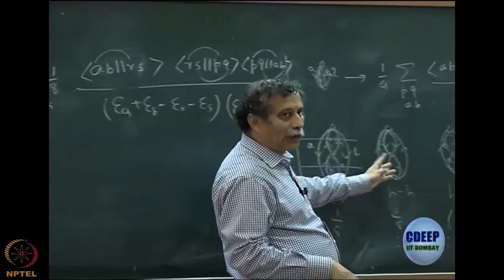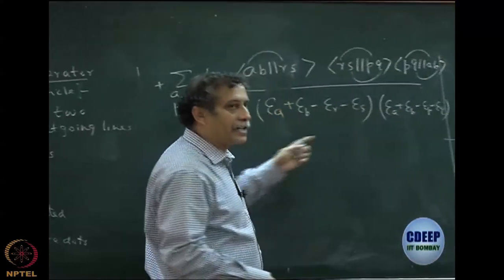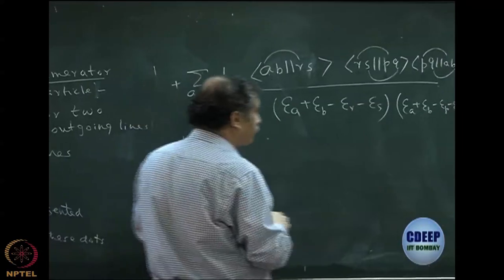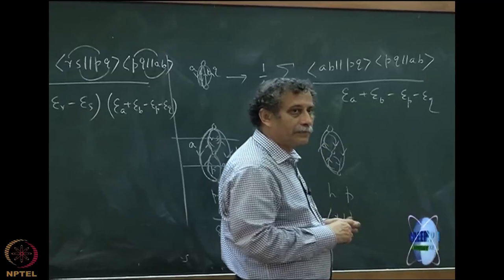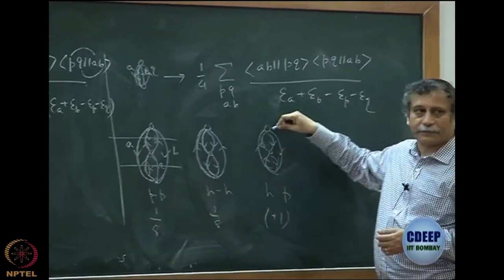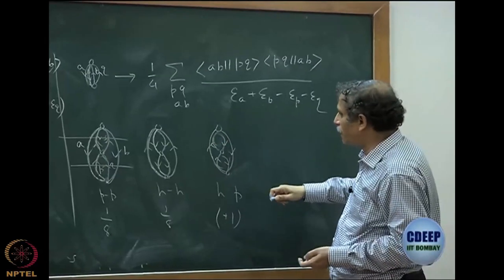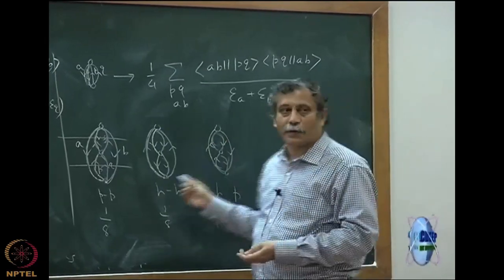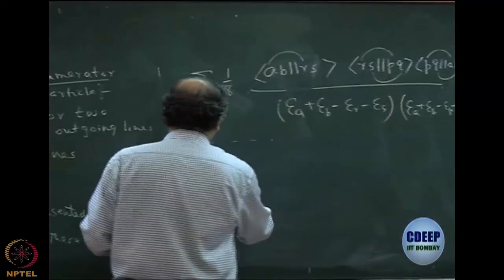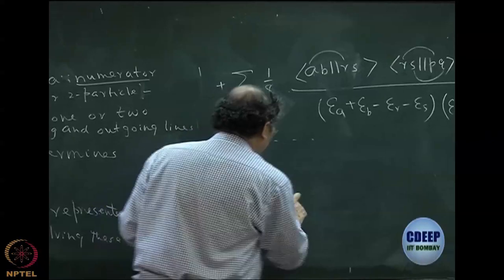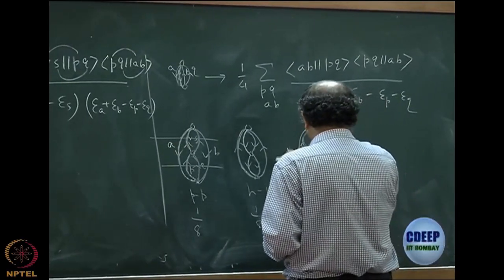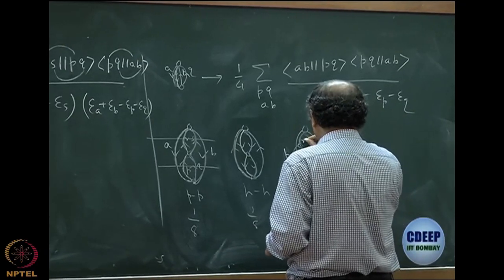I can draw the same hole-hole diagram but the symbols will now change: I will have A, B, C, D and two particle lines. For the third diagram, I can make three loops — this can be a loop by itself, this can be a loop by itself, this can be a loop by itself. So there are three loops. I label the vertices: this is P, this is A, this is Q, this is B, this is R, this is C.